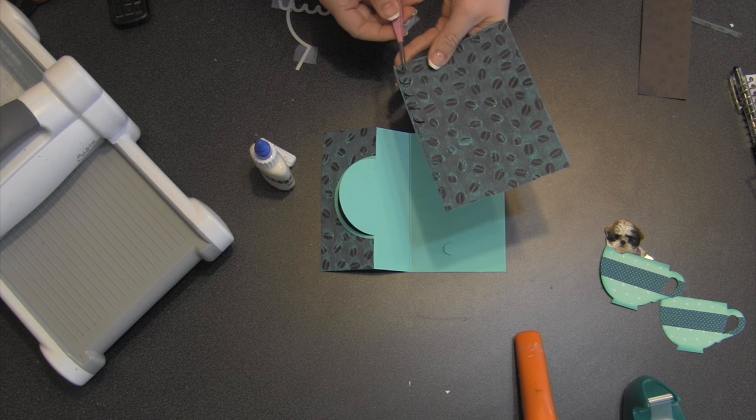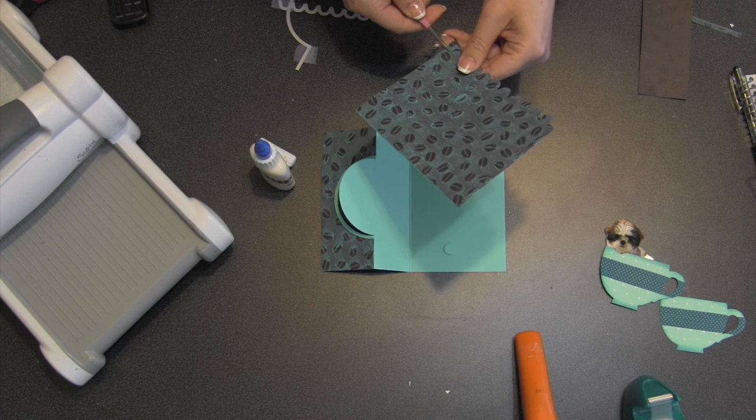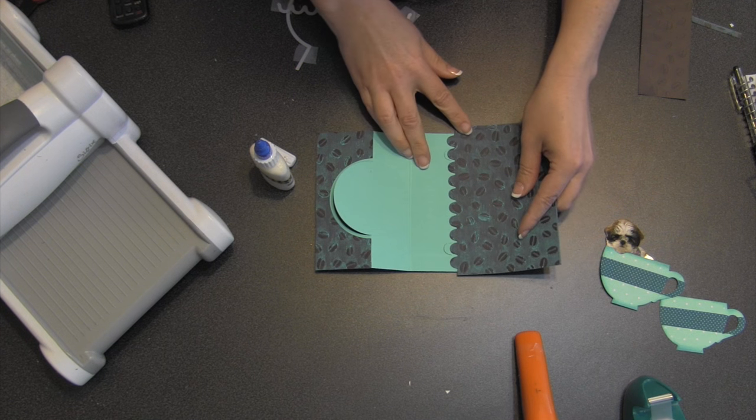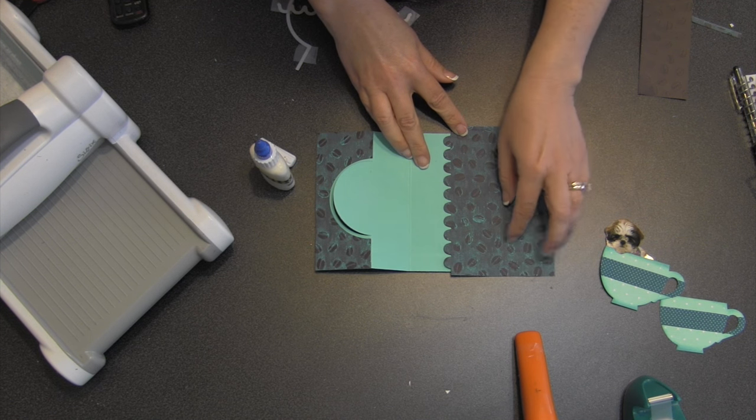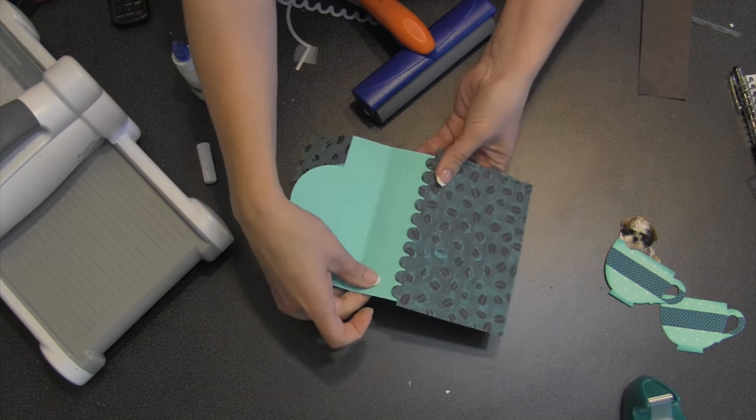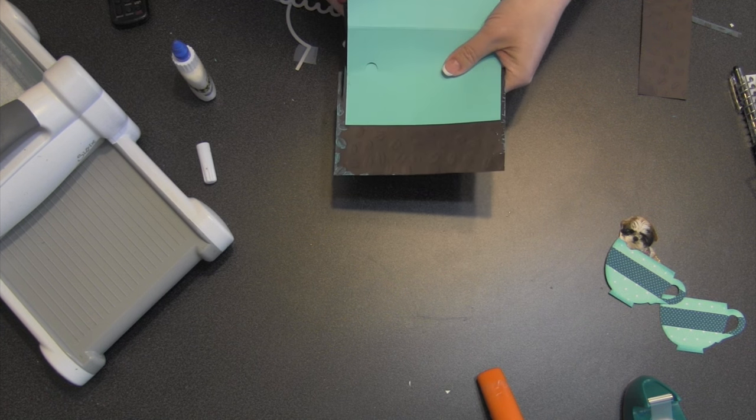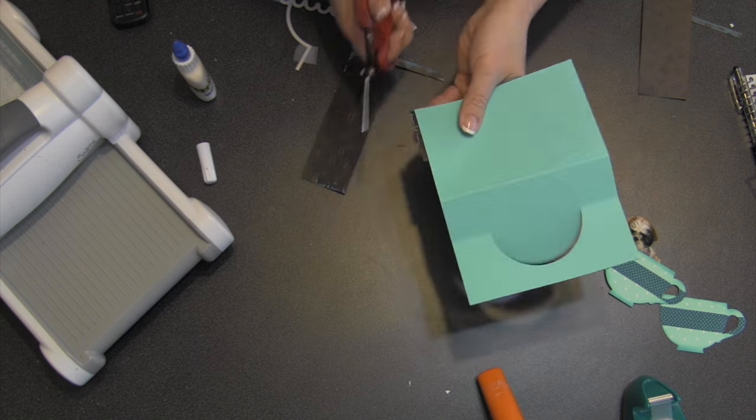Now a cool feature of that scalloped border is that the scallops themselves are the exact same size as the tuck slots on all three pull cards. So you can glue them in such a way that they will cover the tuck slots to decorate them, but that the tuck slots are still operational.